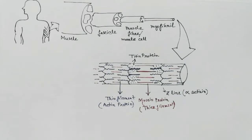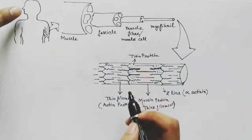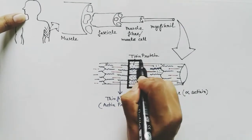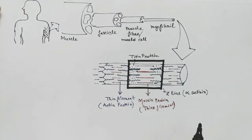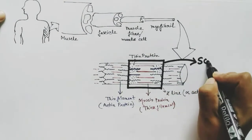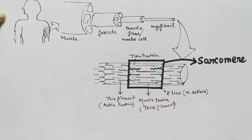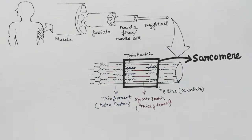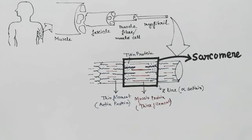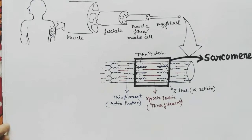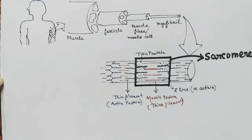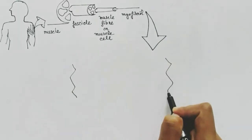Between two Z-lines, the sarcomere contains both thick filaments and thin filaments. Now let us zoom into one sarcomere to understand the detailed structure of the thin filament and the thick filament — that is, the actin and myosin filaments.